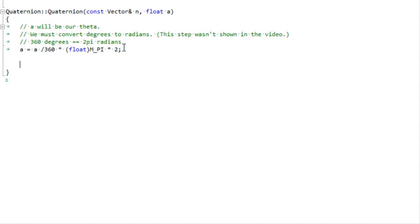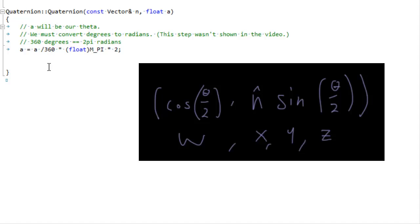One note I didn't mention in the last video, because sine and cosine, the way C++ does it, needs to be in radians and not in degrees. And so we have to do this conversion real quick from radians, from degrees to radians, because degrees are better for human understanding. So w is going to be cosine of theta over 2. Easy.